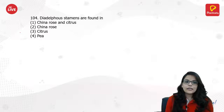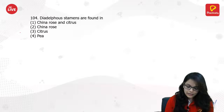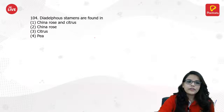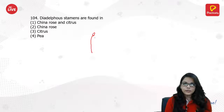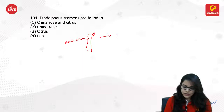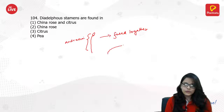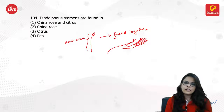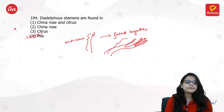Diadelphous stamens are found in which plant? The androcium consists of anther and filament. In diadelphous stamens, some of the filaments are fused together — not in even numbers but in odd numbers, like one group of 3 and another group of 4. That kind of stamen is known as diadelphous stamens, and this is found in pea.